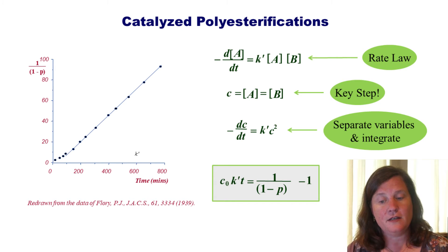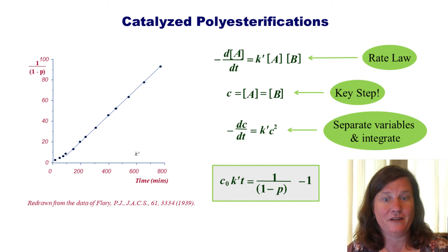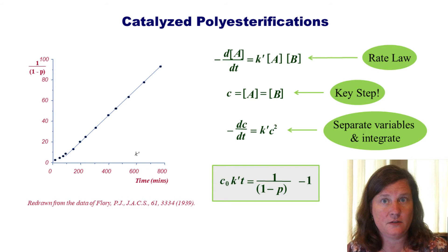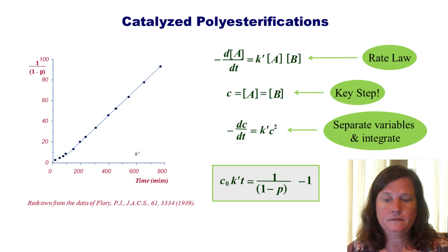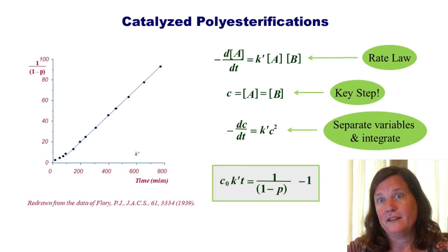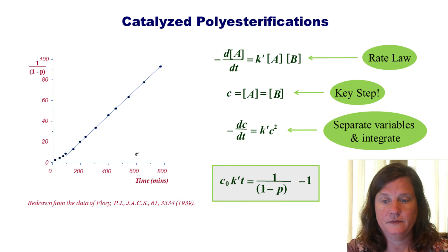Looking at the final equation carefully, if we plot 1/(1 − P) versus time we should get a straight line — and we do. So now it's 1/(1 − P), not 1/(1 − P)², and the squared dependence has gone away. We get a wonderfully linear plot, again except for very short times where we have a lot of monomer and dimer. We'll walk through all the steps in more detail on the document camera.